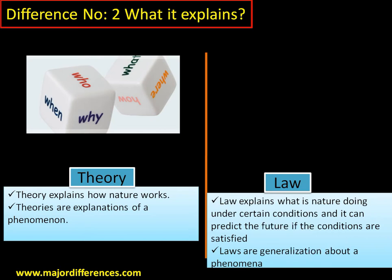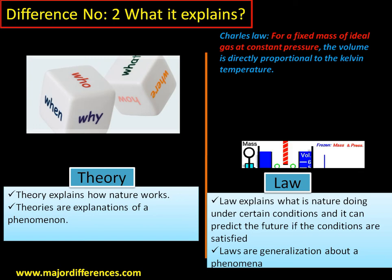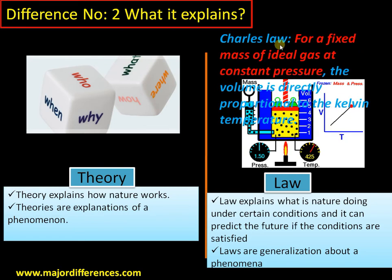In the case of a law, it explains what nature is doing under a certain set of conditions — it's a generalized statement about a phenomenon. Take Charles' law as an example: for a fixed mass of ideal gas at constant pressure, the volume is directly proportional to the Kelvin temperature. Simply put, at constant pressure, the volume increases as the temperature increases. This diagram explains the law.